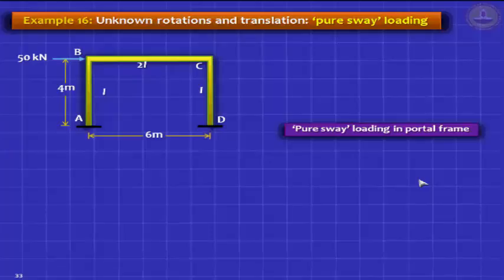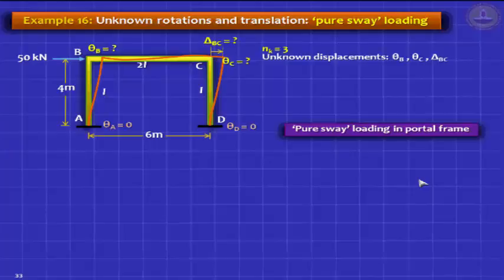Now let us do this problem. This is what we call a pure sway problem. Typically you have three unknowns — theta B, theta C, delta BC — but you can take a shortcut here. Are theta B and theta C related? They look equal, and indeed there appears to be a point of contraflexure in the middle of the beam. So theta B and theta C turn out to be the same thing, and here again we can take advantage of that.